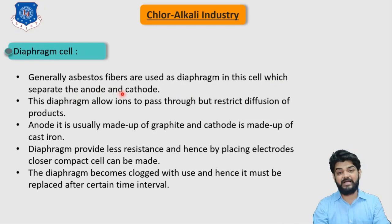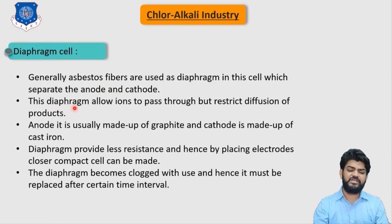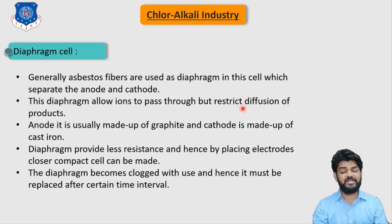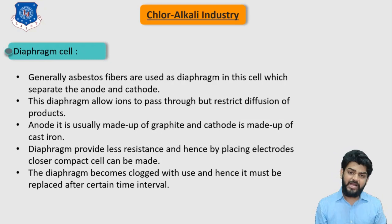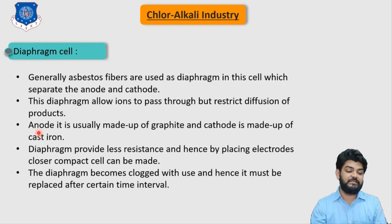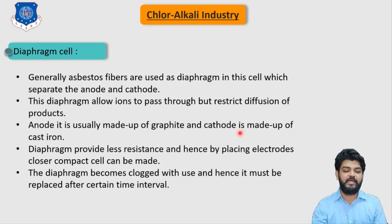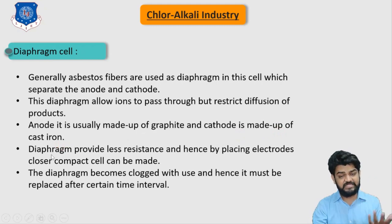Generally asbestos fiber is used as the diaphragm in this cell, which separates the anode and cathode. This diaphragm allows only ions to pass through it but restricts diffusion of products, so NaOH or NaCl cannot pass through. The anode is made of graphite and the cathode is made of cast iron, as already discussed.